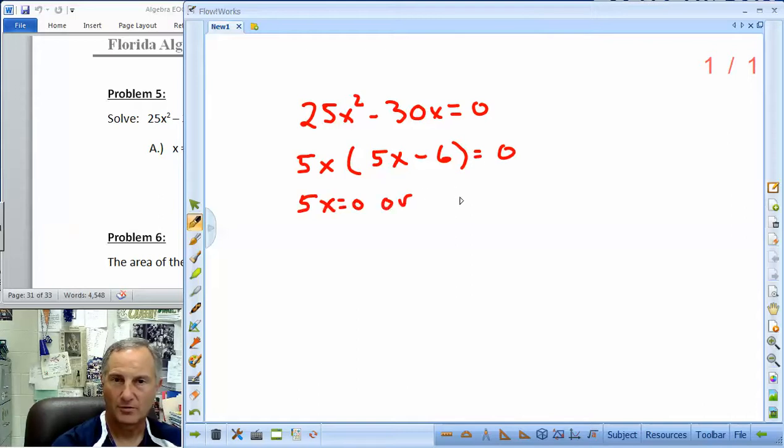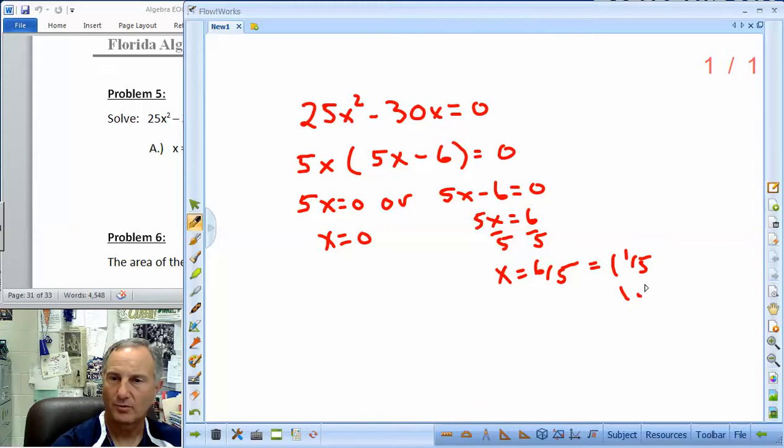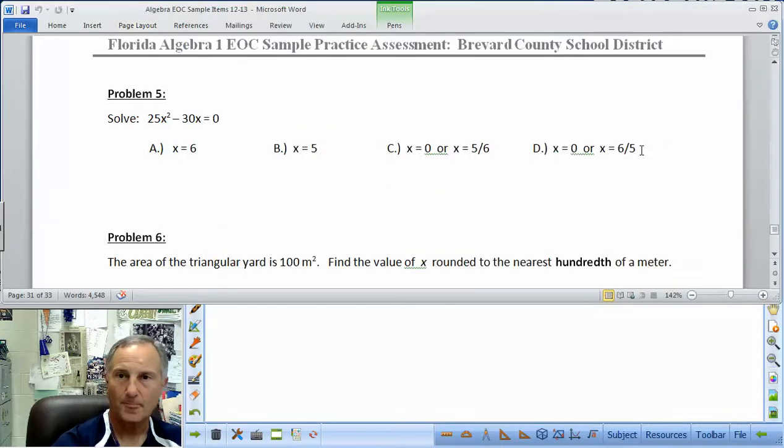Set each factor equal to 0. The only way you get 0 when you multiply two things is if one of them is 0. So x is going to be 0 here. Add the 6 over. Divide the 5 out. x is 6 fifths. So 0 and 6 fifths. This is also 1 and 1 fifth. It's also 1.2. There it is right there. So your answer is D.